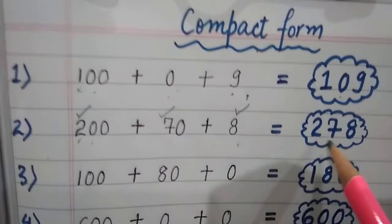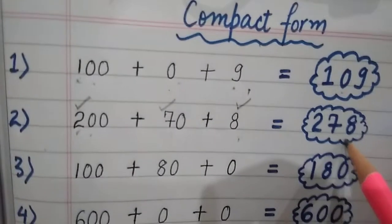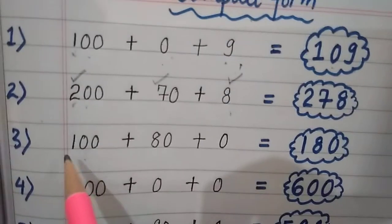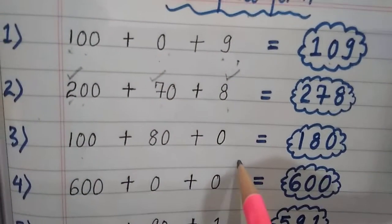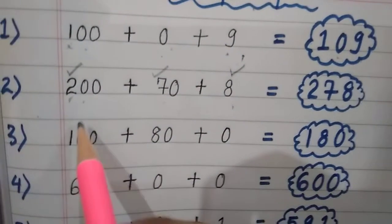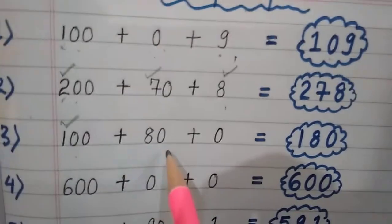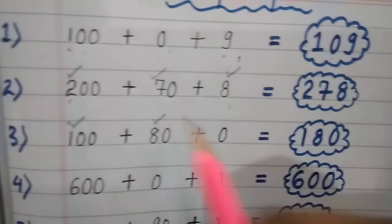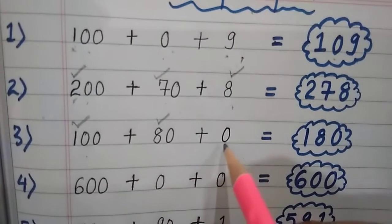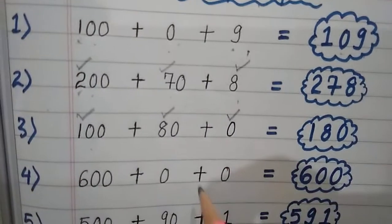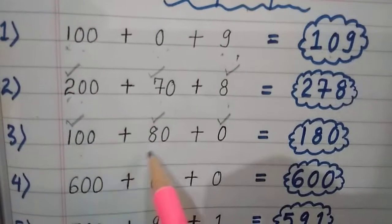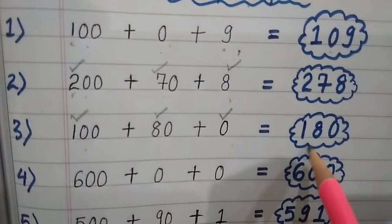The next question is 100 plus 80 plus 0. So the first digit is 1. 80 gives us 8. And 0 stays as 0. So 180.